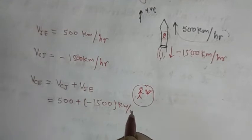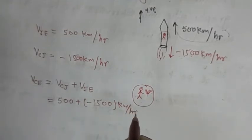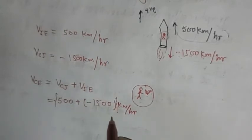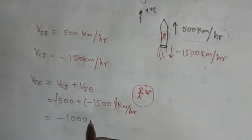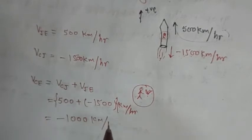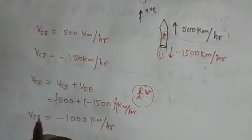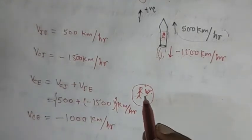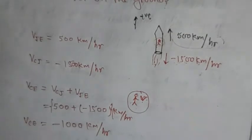This gives minus 1000 km per hour. So VCE, the velocity of combustion with respect to earth frame of reference, is minus 1000 km per hour. I hope that you people have understood this problem.